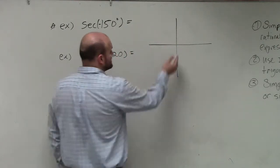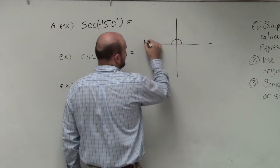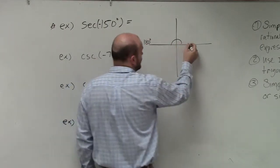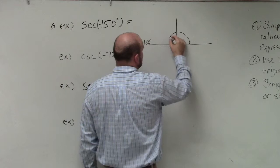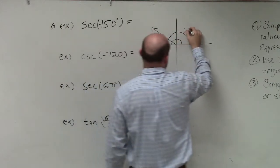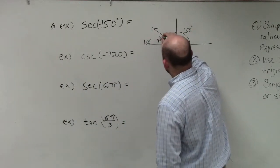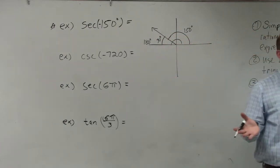Now, we know that halfway around the circle is 180. So 150 degrees is probably going to look something like this, where the reference angle would be 30 degrees.